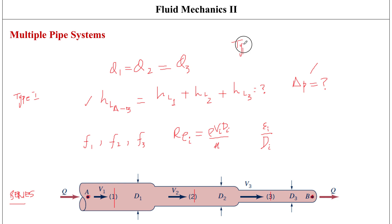A Type 2 problem is a bit more difficult to determine because you have to apply an iterative scheme — a trial and error approach. Similarly, if you were to find out the pipe diameter with one of the other variables given, that would be a Type 3 problem. It's called a Type 3 problem and again it's more complex; you have to use an iterative trial and error method. You should look at a couple of examples to see how you can work this out.